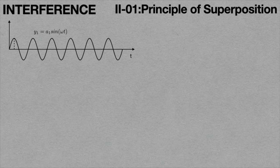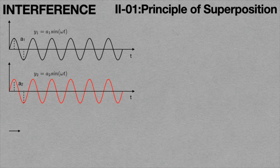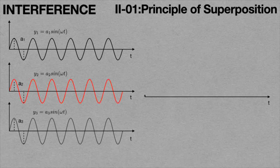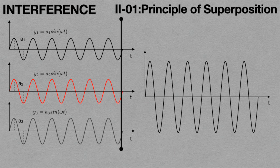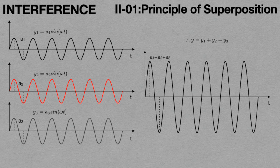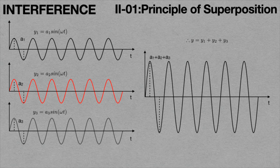In the case of three light waves coming from different light sources in a medium, when these three are superposed, the resultant displacement is as shown in this animation. The resultant maximum amplitude becomes A1 plus A2 plus A3, and the resultant displacement becomes Y is equal to Y1 plus Y2 plus Y3. That means if any number of waves from light sources are superposed, then according to the superposition principle, the resultant displacement becomes Y is equal to Y1 plus Y2 plus Y3 plus so on.